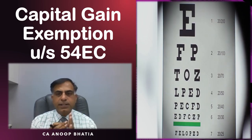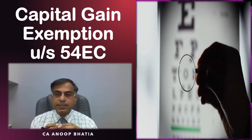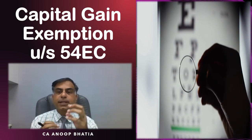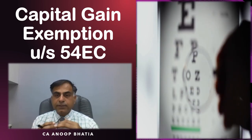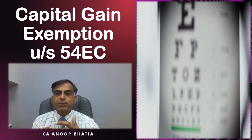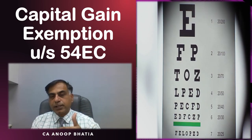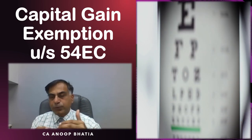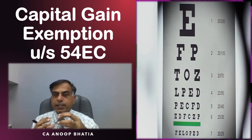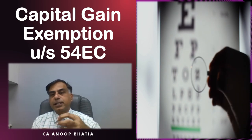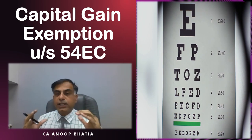Hello friends, Namaskar. Whenever there is a capital gain, or specifically speaking a long term capital gain, and the assessee wants to save tax on such long term capital gain — because long term capital gain usually attracts a 20% rate of taxation — the assessee feels that there should be some investment option which, if exercised, would help save the capital gain tax liability. In such a scenario, the provisions of Section 54 to Section 54GB of the Income Tax Act 1961 provide for certain exemption sections, due to which the capital gain income may be claimed exempt, meaning no tax liability will be payable on the long term capital gain.